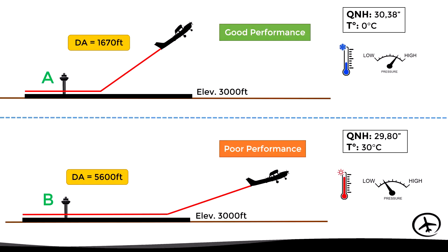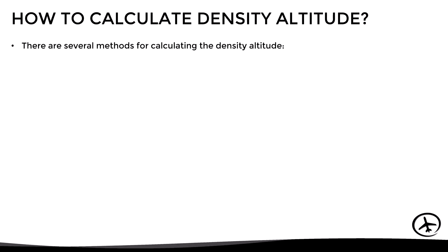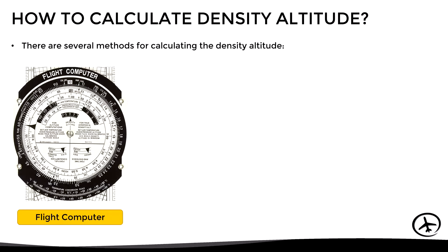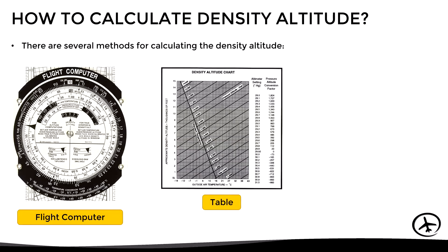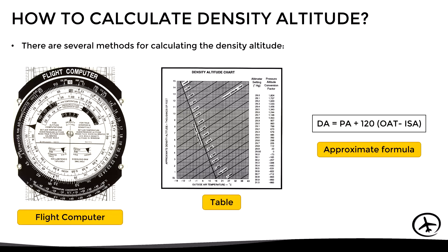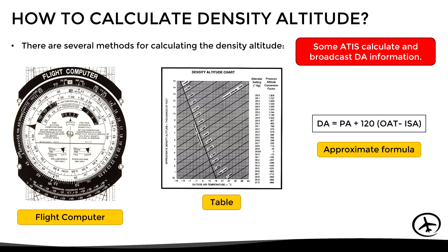Having understood the concept of density altitude, let's see how to calculate it. There are several methods: a flight computer (manual or electronic), a graph or table, or an approximate formula. It is important to mention that at some airports, ATIS calculates and broadcasts the density altitude based on current conditions, so the pilot doesn't need to calculate it manually.